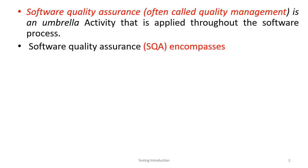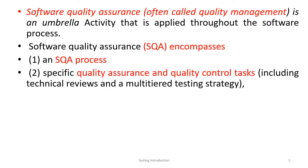Software quality assurance encompasses an SQA process — the software quality assurance process. This includes specific quality assurance and quality control tasks like testing, technical review, etc. Software quality assurance is in a way a quality control task.